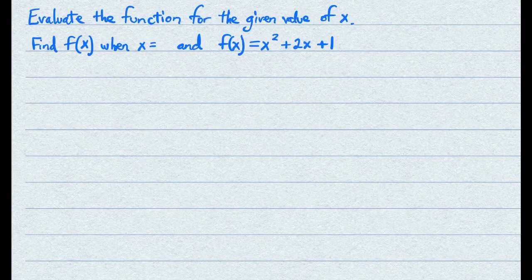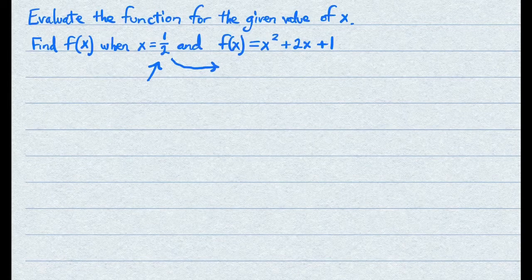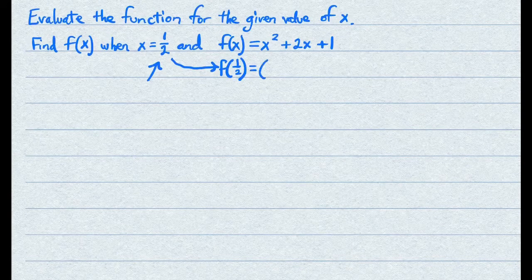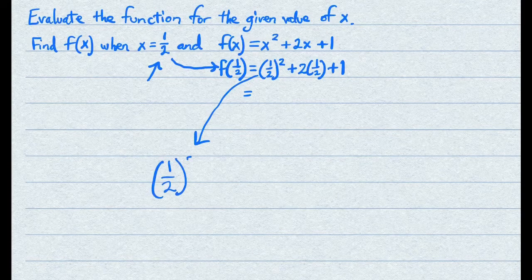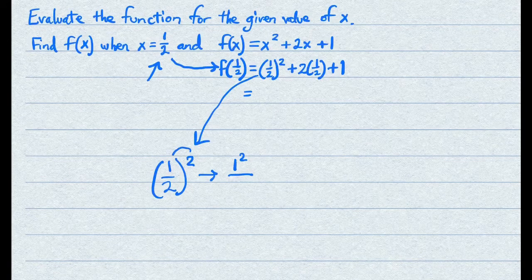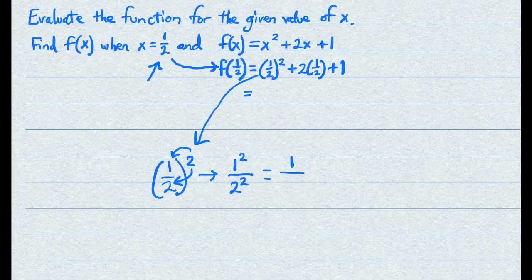What if you have a fraction? Let's say 1 half. You do the same thing — take 1 half and plug it into all the x's. So x squared becomes 1 half squared, plus 2 times 1 half, plus 1. When squaring this fraction, you square the top and the bottom at the same time. So that becomes 1 squared over 2 squared. 1 squared is 1 and 2 squared is 4, so your answer up here is 1 over 4.